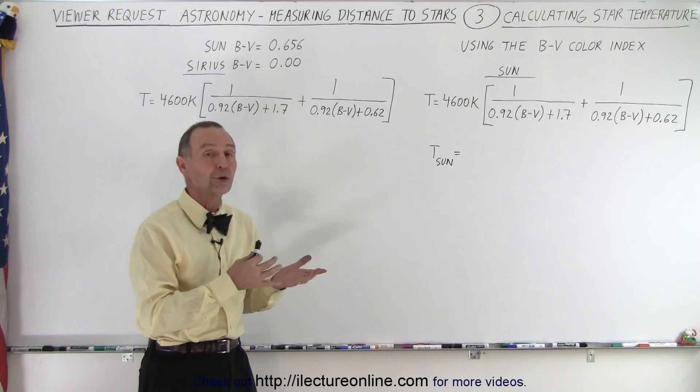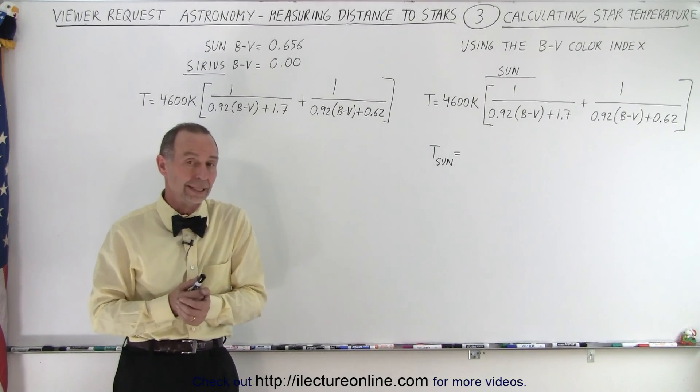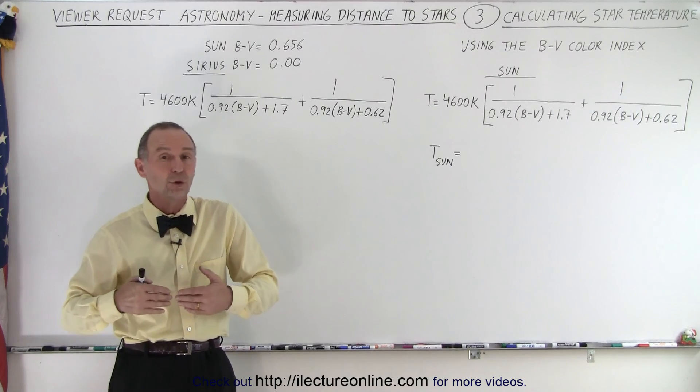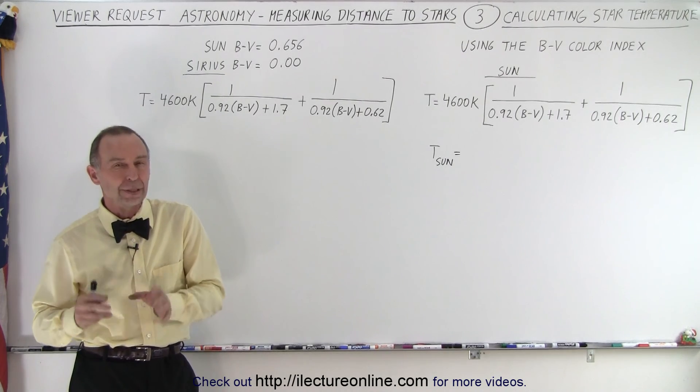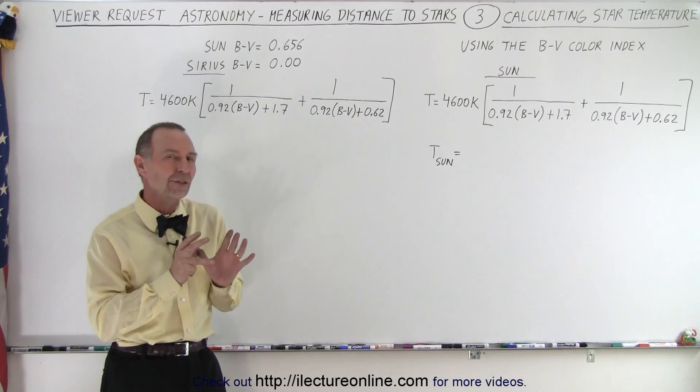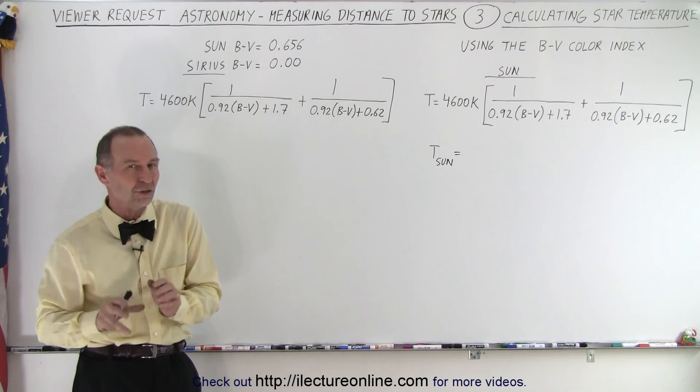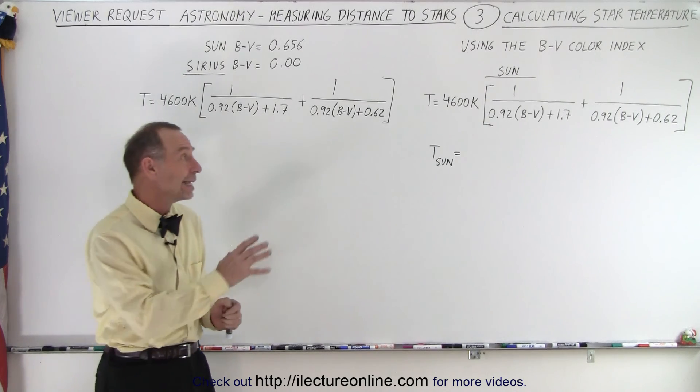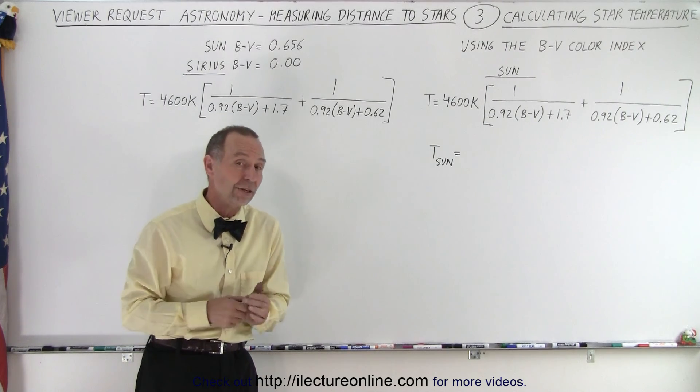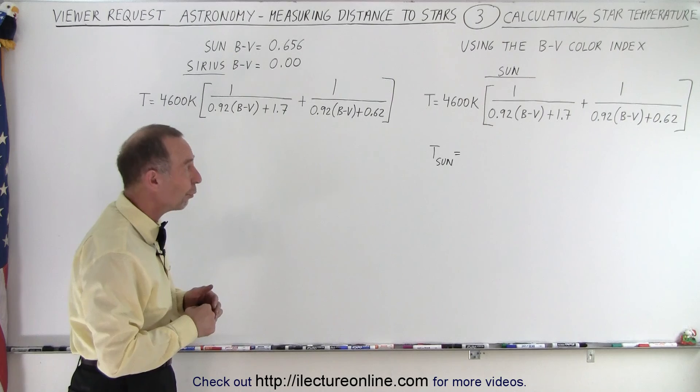And here we're going to show you how those temperatures were calculated. Now of course we also have Wien's law technique, but this is better because it accounts for the type of light that we get from each type of star, because there's variations between the stars that the color index, the B minus V color index, does account for.